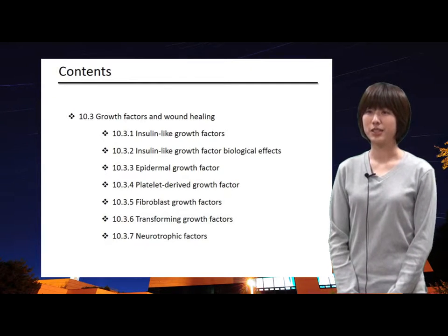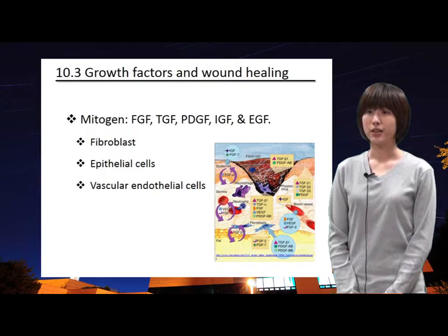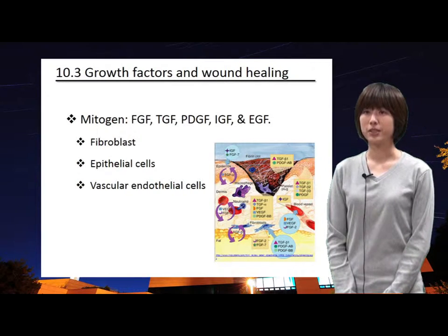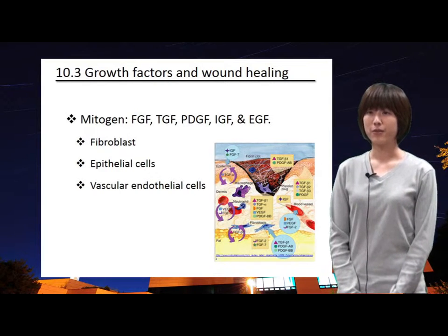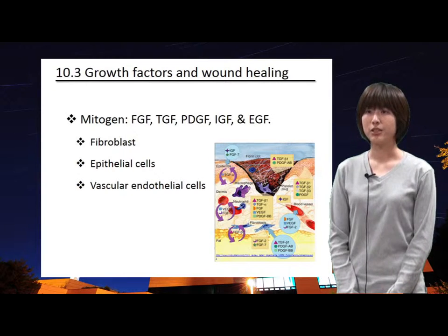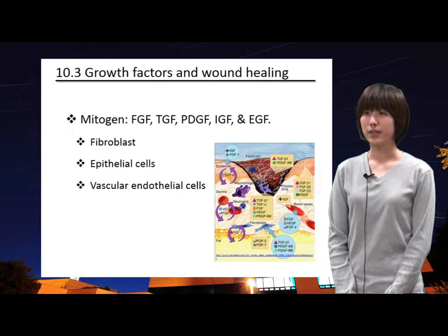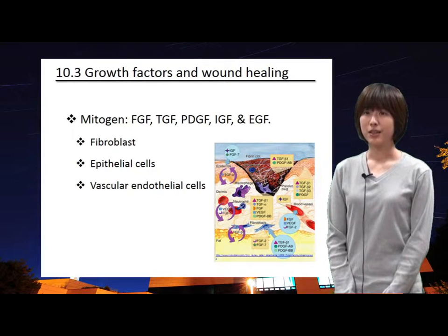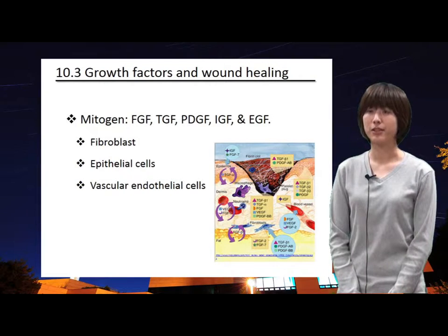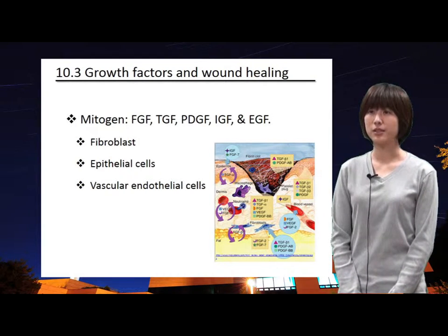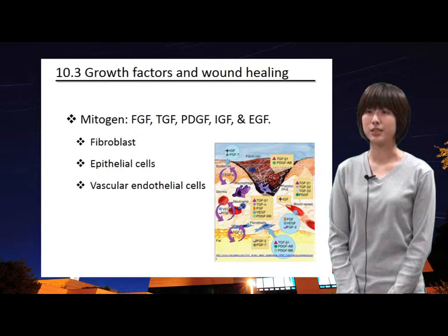The wound healing process is complex and not yet fully understood. Various cells are involved in this process and secrete various growth factors, which are called mitogens. The growth factors that appear most significant to this process include FGFs, TGFs, PDGFs, IGF, and EGF. These mitogens stimulate the growth and activation of various cell types, including fibroblasts, epithelial cells, and vascular endothelial cells, which advance healing by promoting granulation and subsequent epithelialization.